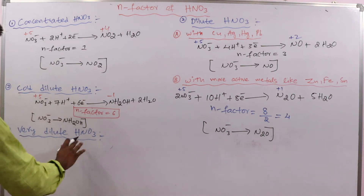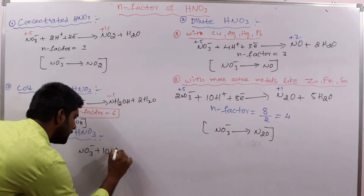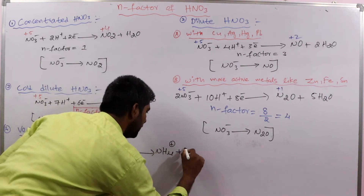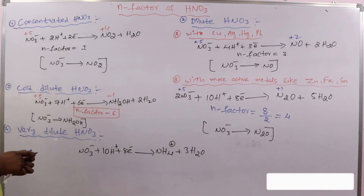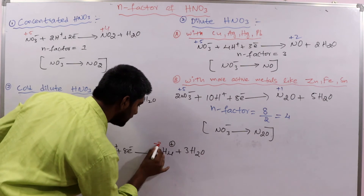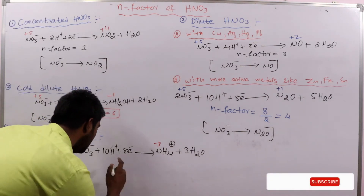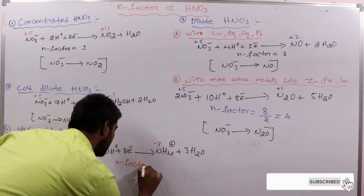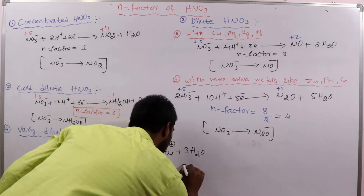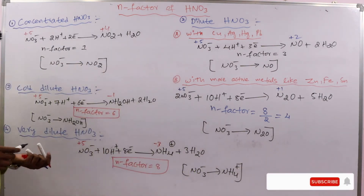For very dilute HNO3, the half-reaction is: NO3⁻ + 10H⁺ + 8e⁻ → NH4⁺ + 3H2O. The oxidation state of nitrogen changes from +5 to -3, a total change of 8 units, so N-factor equals 8. The overall conversion here is NO3⁻ to NH4⁺ (ammonium ion).